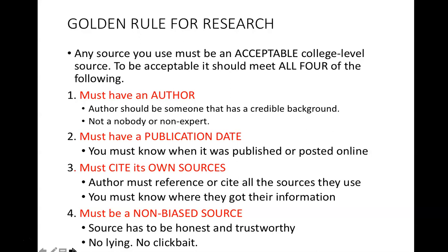One: your source must have an author. You have to know who is writing your research. This author must be someone that has a credible background. You should always Google the name of the author of any source you are going to use for a college paper. Two: your source must have a publication date — you must know when something was published or posted online. Number three: your source must cite or reference its sources. You must know where the author got the information they are writing about — you can't cite a plagiarizer. Number four: your source must be from a non-biased source. The source has to be honest and trustworthy — no lying, no clickbait, no trying to sell you something.